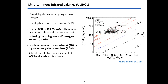ULIRGs are typical gas-rich galaxies which are undergoing a major merger and they are characterized by a very high infrared luminosity which is above 10^12 solar luminosities, which implies a very high star formation rate. On this diagram on the right you can see the stellar mass versus star formation rate for a sample of local ULIRGs, and you can see that the star formation rate is well above the main sequence at redshift zero and more similar to what we observe in redshift two millimeter galaxies. The nucleus of the ULIRGs is powered by a starburst or by an active galactic nucleus, and for this reason they are an ideal target to study the effect of AGN and starburst feedback.